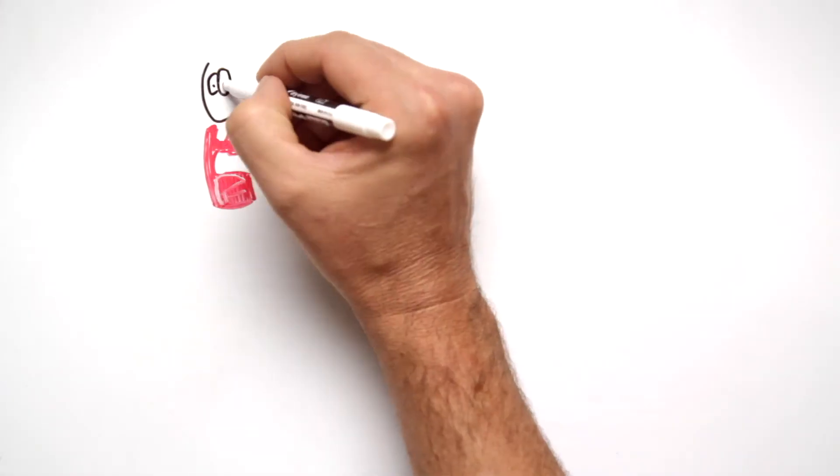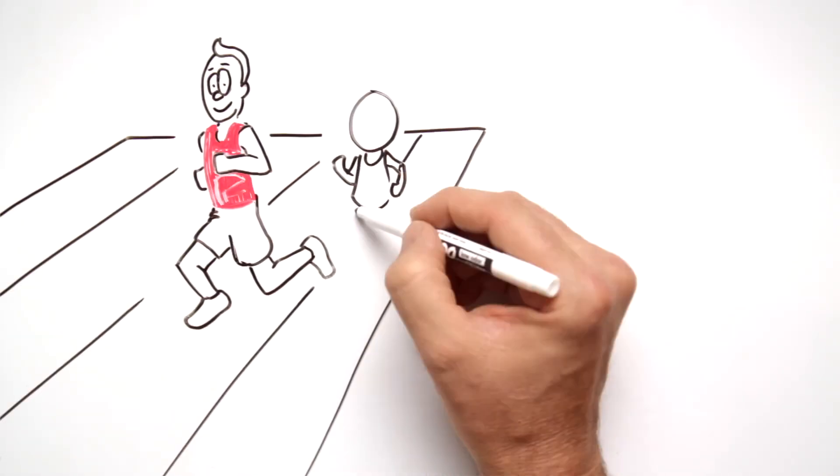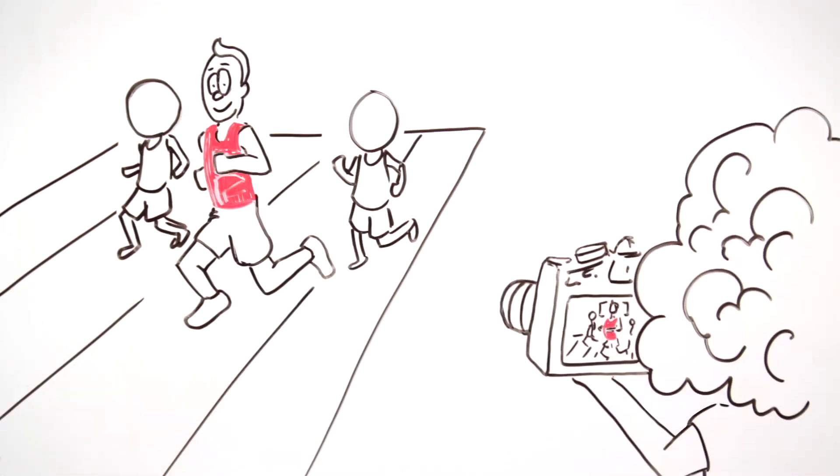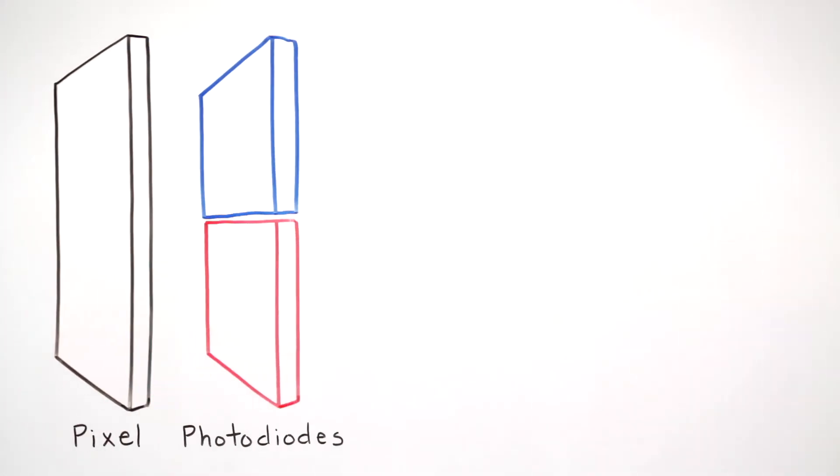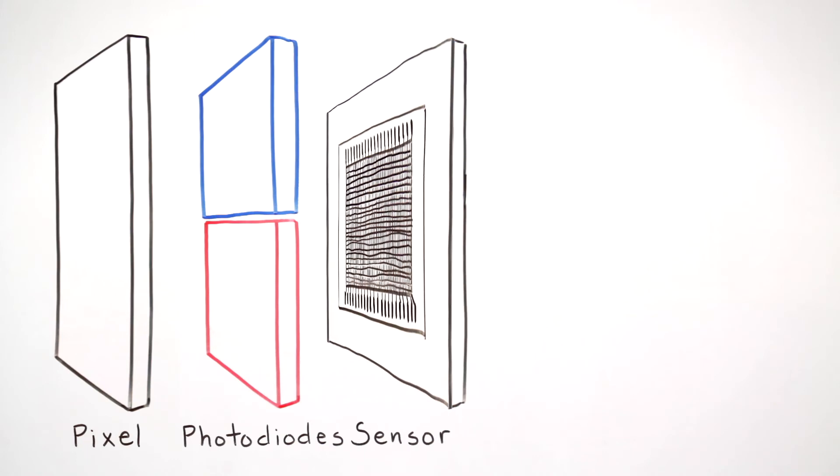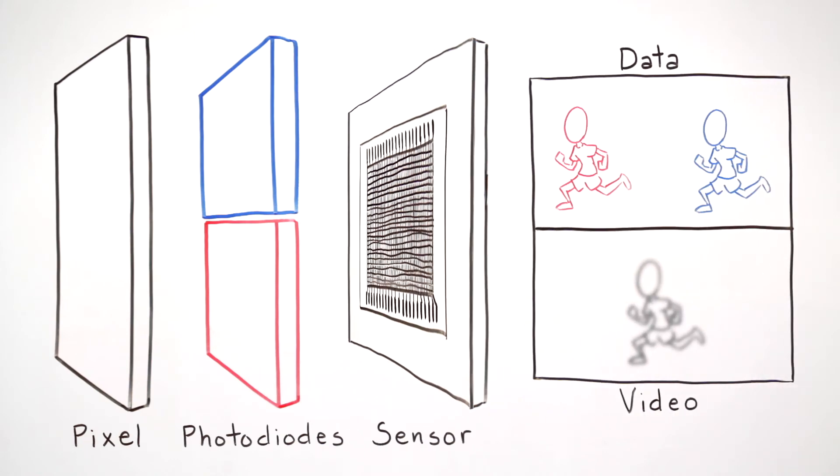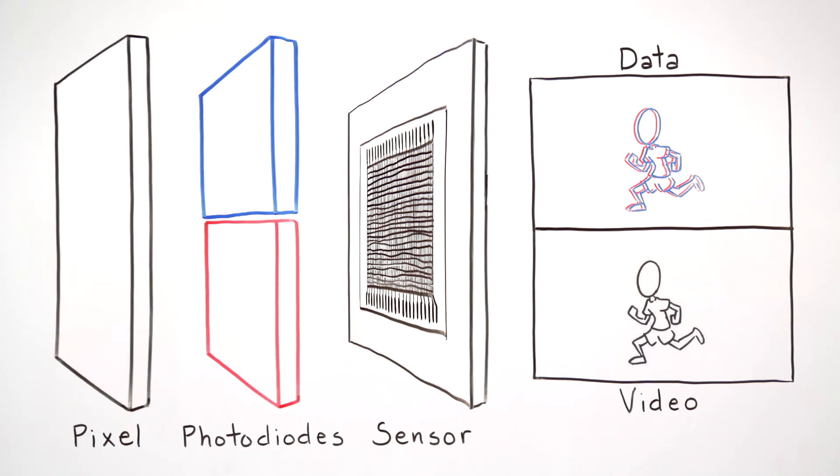Canon's cutting-edge dual pixel CMOS AF system allows for high-speed accurate autofocus while shooting video or photos in live view mode. Two diodes are packed onto each pixel and allow the system to quickly and accurately measure discrepancies in light wavelengths to find focus.